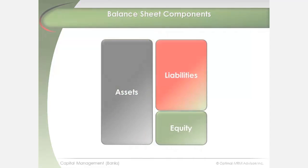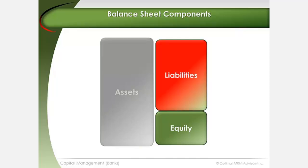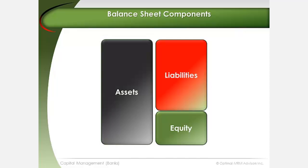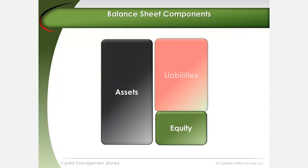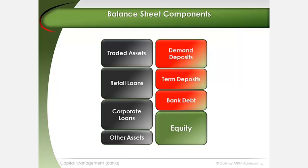The asset portion of the balance sheet represents the bank's investments in assets financed with a combination of debt and equity. There are constraints on the structure of the balance sheet in large deposit-taking commercial banks. Such banks operate with a natural allocation to what can be referred to as structural assets.